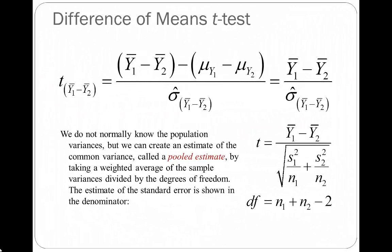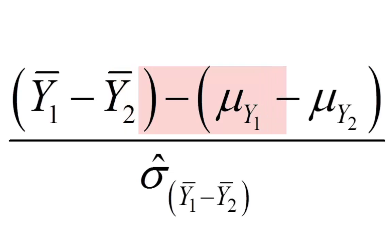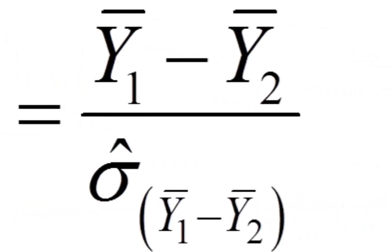Here's our t-test. It looks complicated at first but we can simplify it. In the numerator we have y-bar sub one minus y-bar sub two, minus (mu sub y one minus mu sub y two). Technically this is a difference of differences of means, but with the null hypothesis we assume mu sub one minus mu sub two equals zero, so that term disappears and we're left in the numerator with just y-bar sub one minus y-bar sub two.